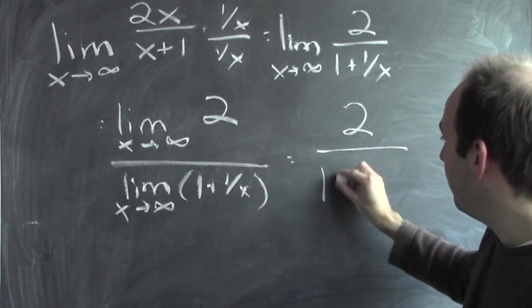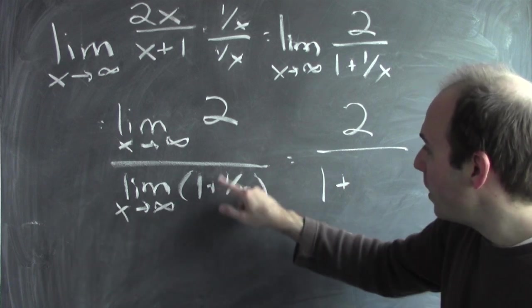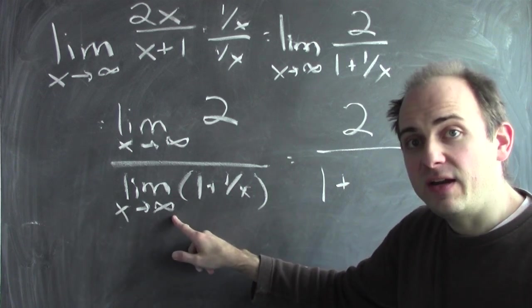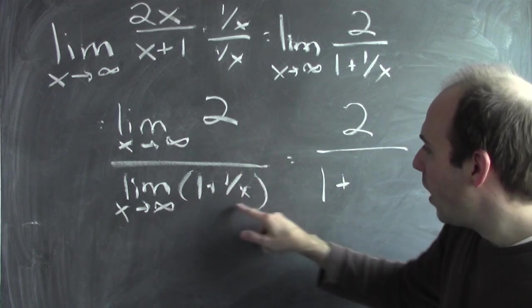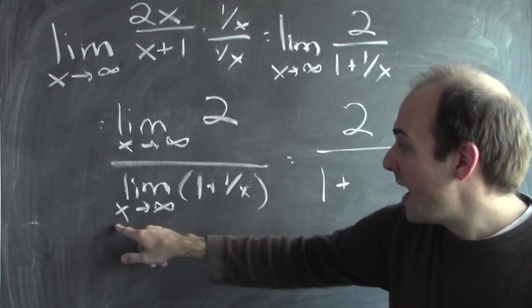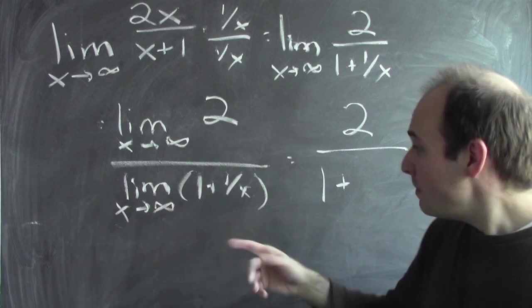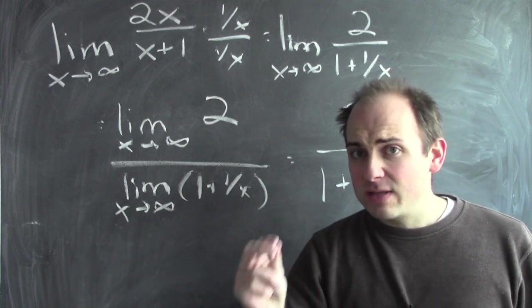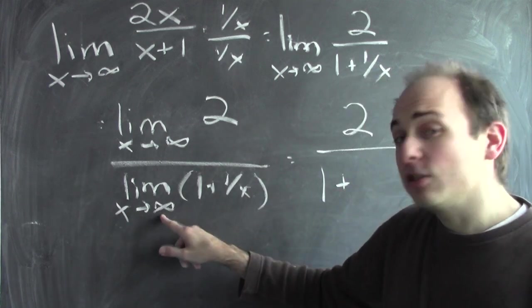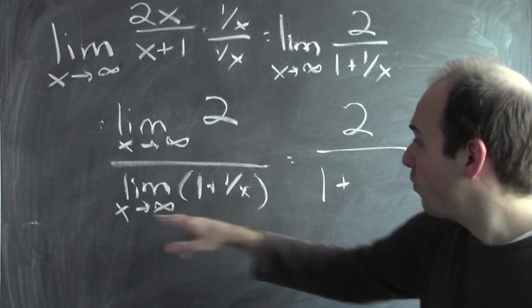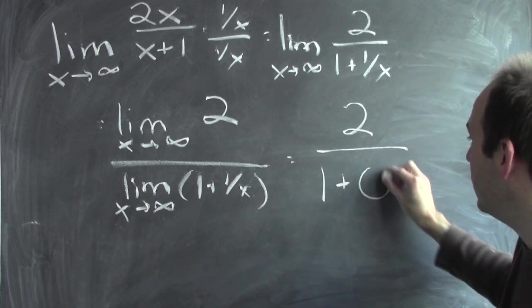The limit of 1 is just 1. And what's the limit of 1 over x as x approaches infinity? Well, that's asking what is 1 over x close to when x is very large? Well, I can make 1 over x as close to 0 as I like if I'm willing to make x large enough. So the limit of 1 over x as x approaches infinity is 0.